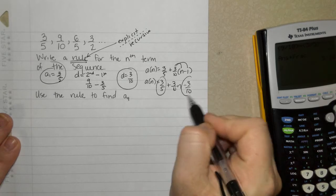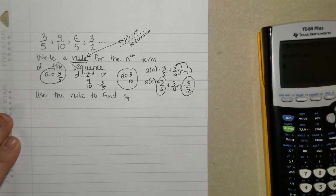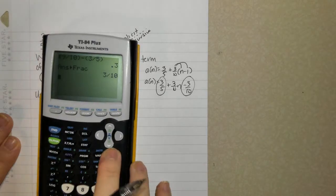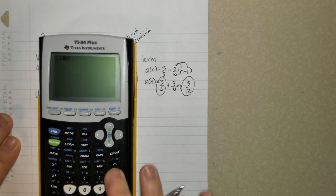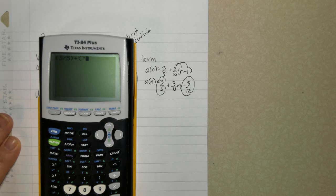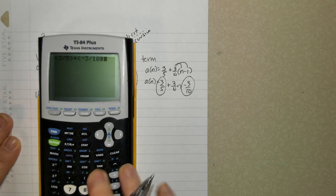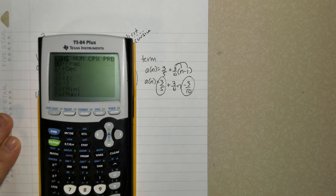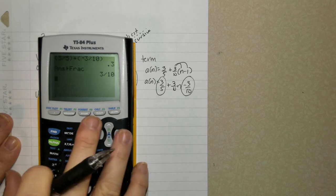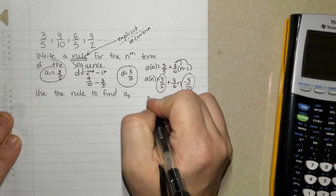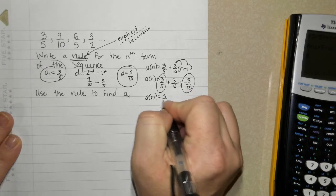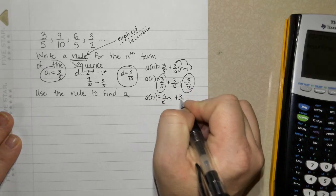Three terms. Two of them are like terms. Some of you, again, will do it in your head. Others are going to feel more confident using a calculator. So 3 divided by 5 plus a negative sign, which can be found below the 3, negative 3 divided by 10. I turn it back into a fraction, and I get positive 3 tenths. a of n is equal to 3 tenths n plus 3 tenths.